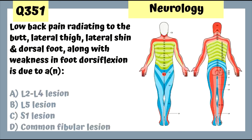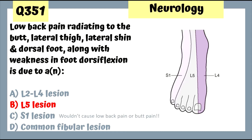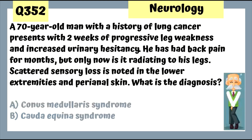Question 351: Low back pain radiating to the buttock, lateral thigh, lateral shin, and dorsal foot along with weakness in foot dorsiflexion is due to an L5 lesion. L4, L5 — memorize the medial to lateral dermatomal distribution. An S1 lesion wouldn't cause low back or buttock pain — it would need to be a little higher at L5.